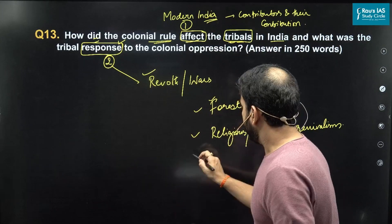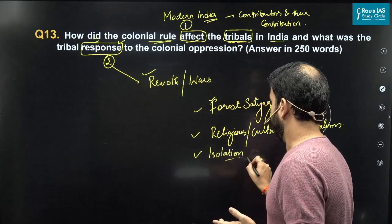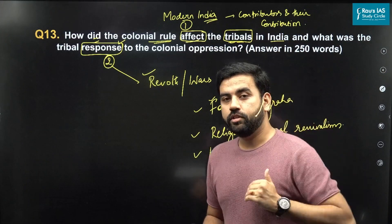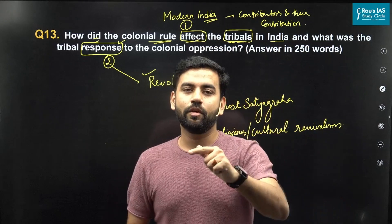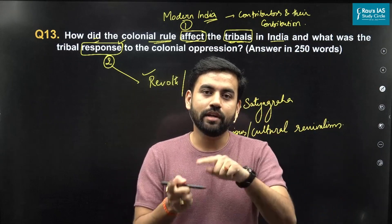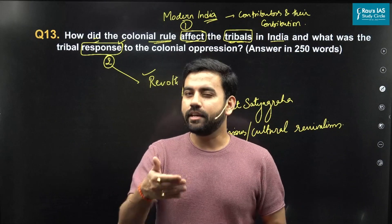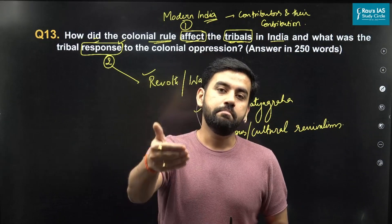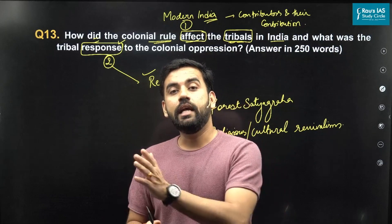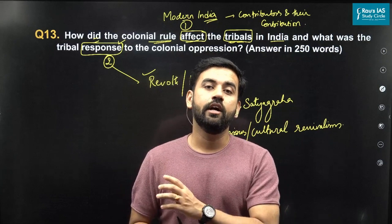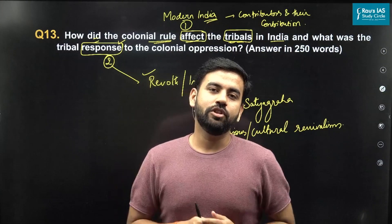For example, some tribes followed the policy of isolation, especially in the Himalayan region. When they realized there was interference from the colonial powers going against their culture, economy, and social practices, they secluded themselves from mainstream politics and tried to remain in the hilly areas, completely isolated from the British Empire.